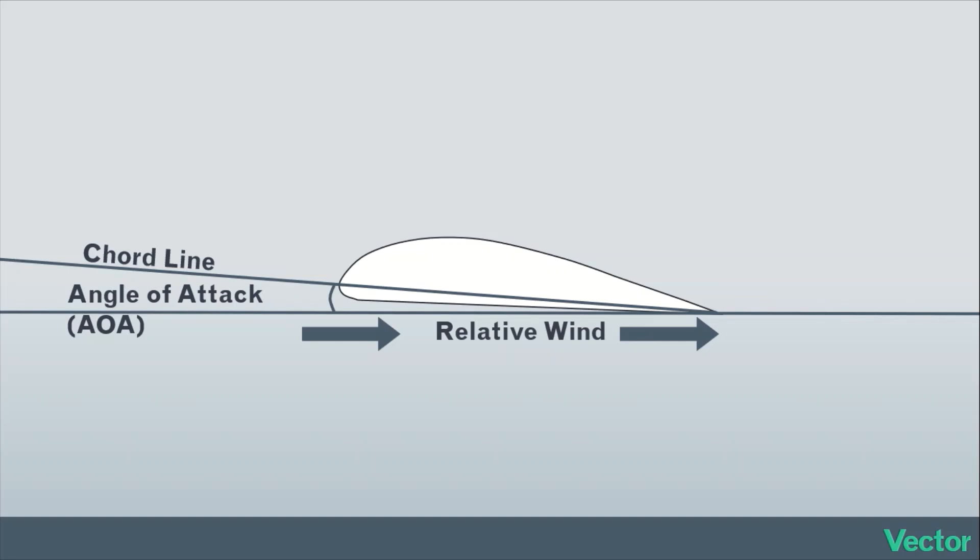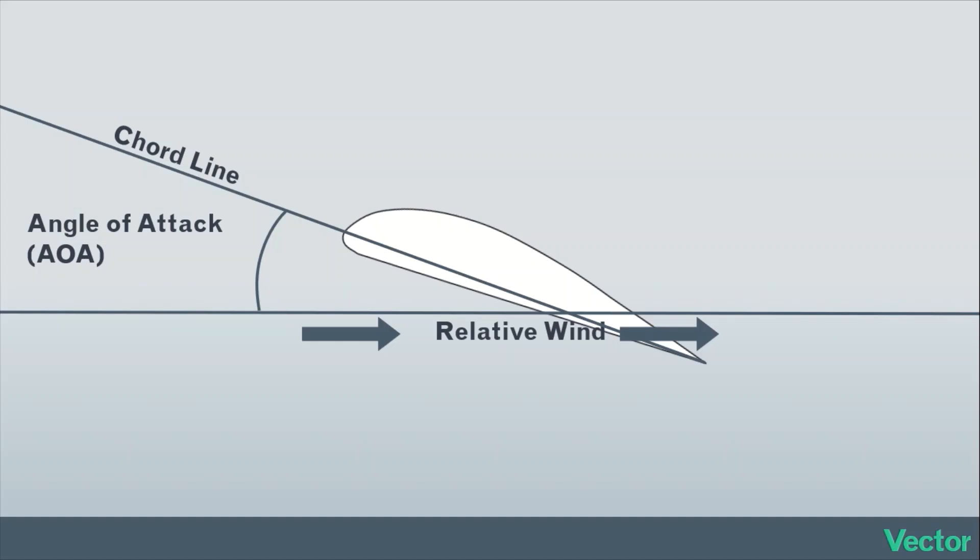The angle formed between the relative wind and the cord line is the angle of attack. And we can change the angle of attack by pitching up and down.